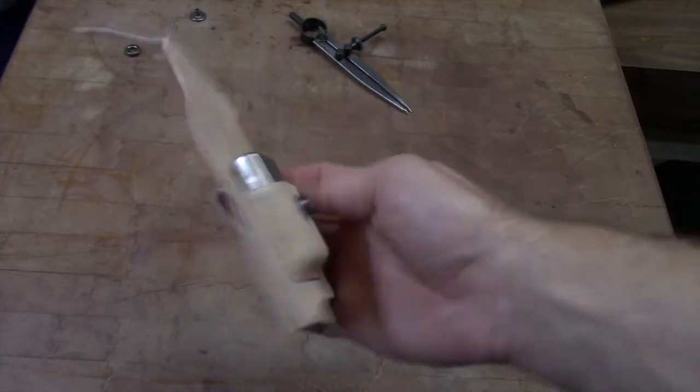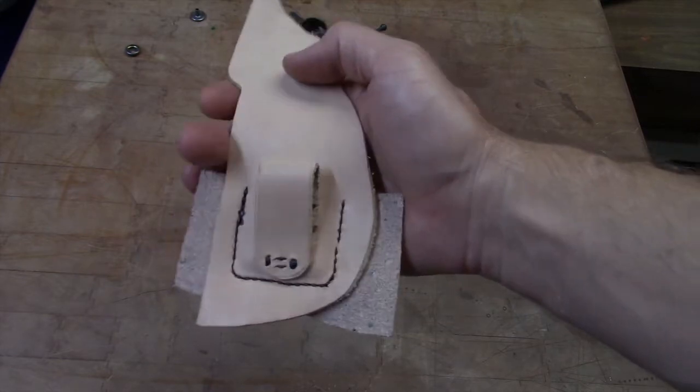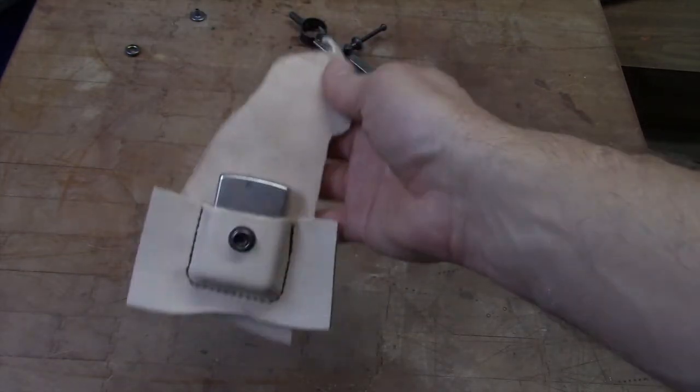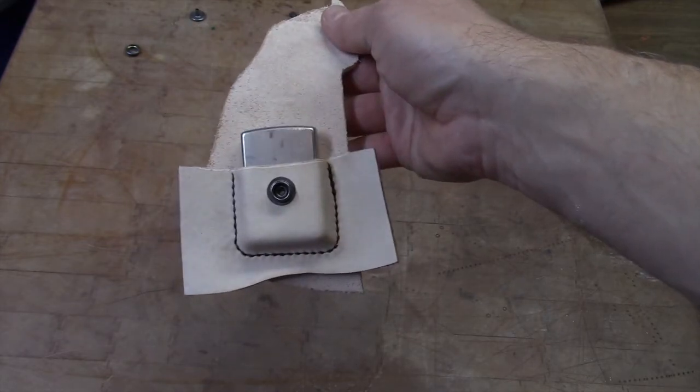Here you can see the two pieces stitched together. There's the belt loop attached on the back. And again on the front, I've already attached a snap on the bottom section of the case.